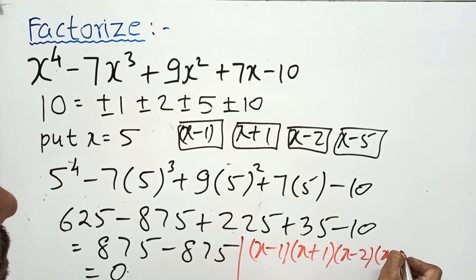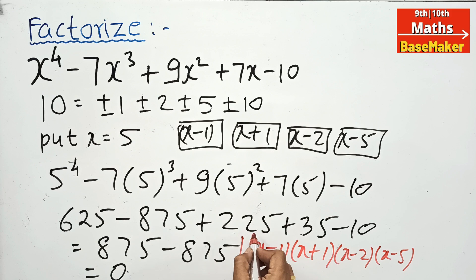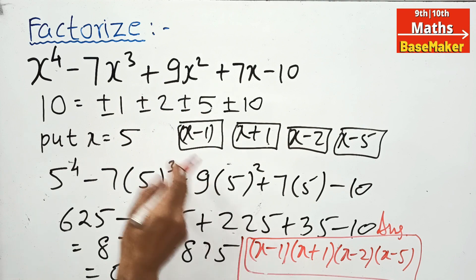Therefore, the answer is x minus 1, x plus 1, x minus 2, x minus 5. These are the factors of this biquartic polynomial. Since the degree is 4, therefore 4 factors are there.